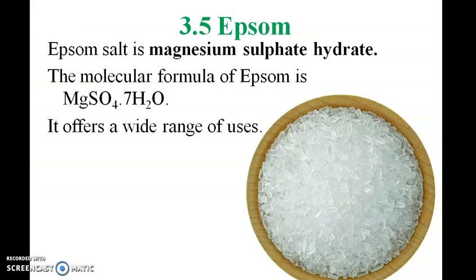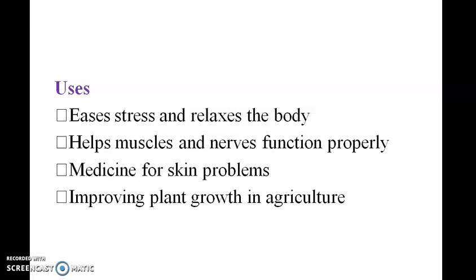Epsom salt is magnesium sulphate, MgSO4·7H2O. It has a wide range of uses: it helps release stress from the body, helps muscles and nerves function properly, is used as medicine for skin problems, and supports plant growth and agriculture.